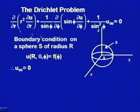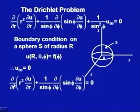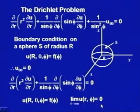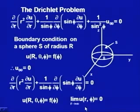So we reduce the PDE to: (∂/∂r)(r² ∂u/∂r) + (1/sin φ)(∂/∂φ)(sin φ ∂u/∂φ) = 0, with boundary condition u(r,θ,φ) = f(φ), and as r approaches infinity, u(r,φ) approaches 0. This partial differential equation with these boundary conditions is called the Dirichlet problem.